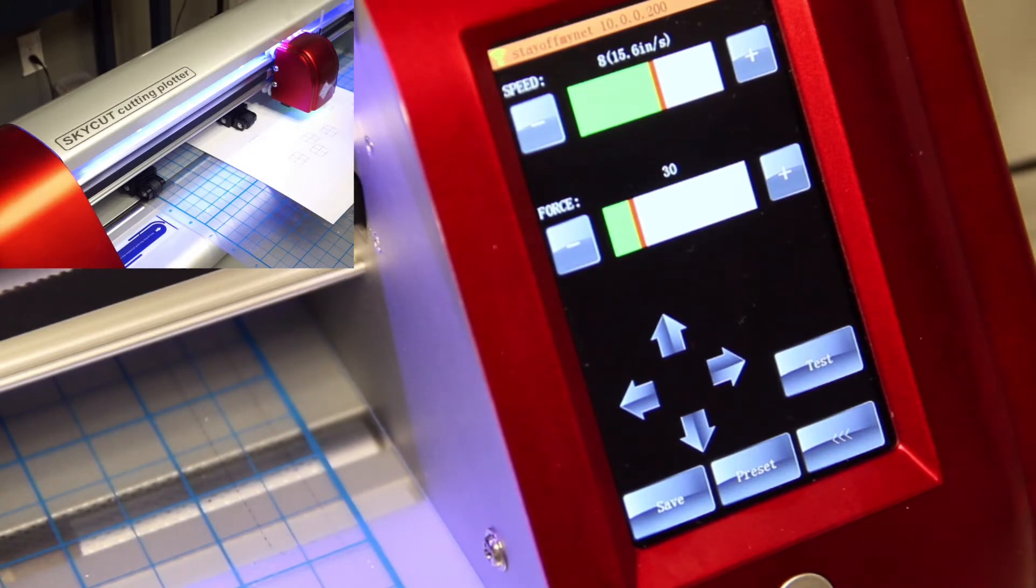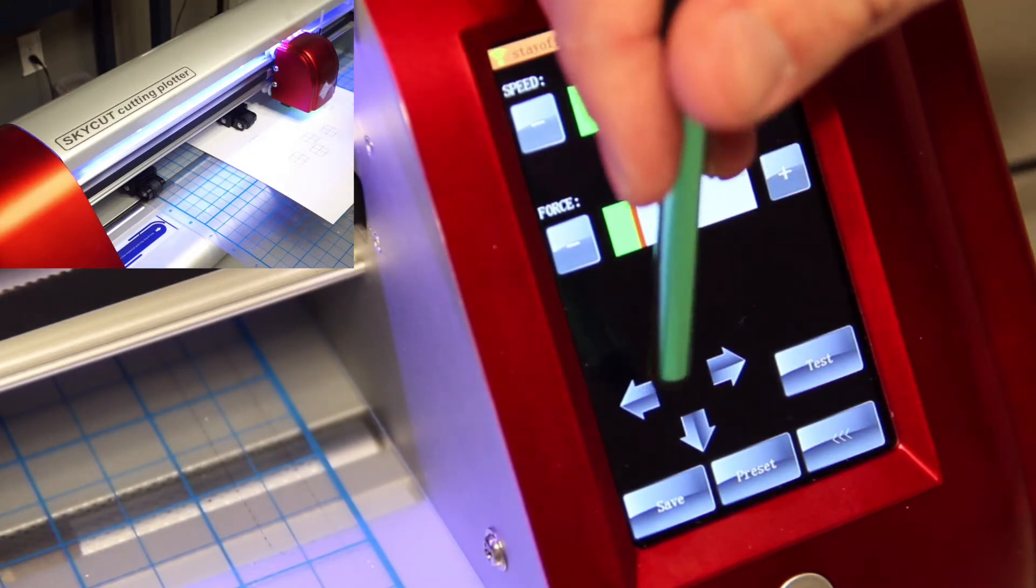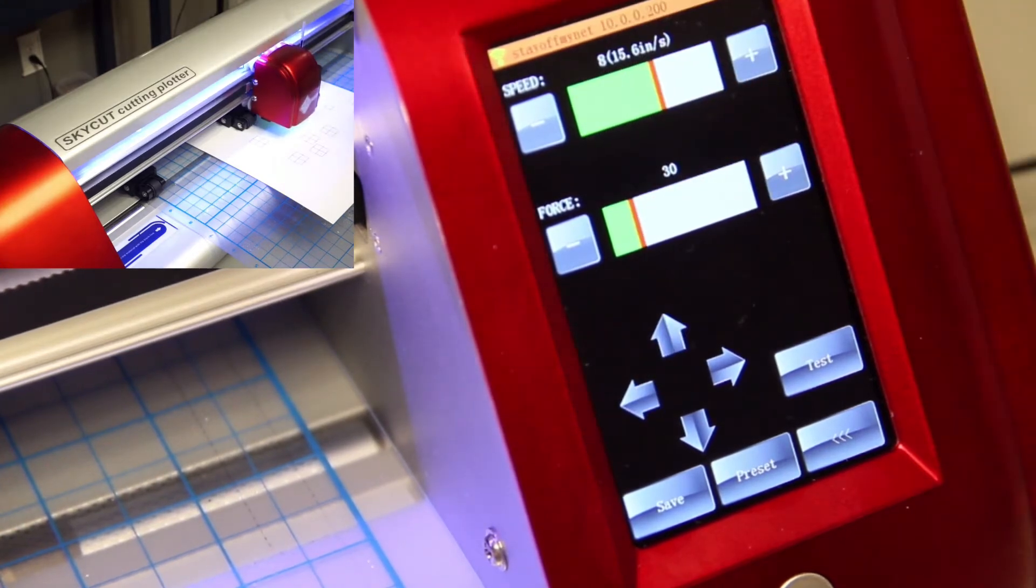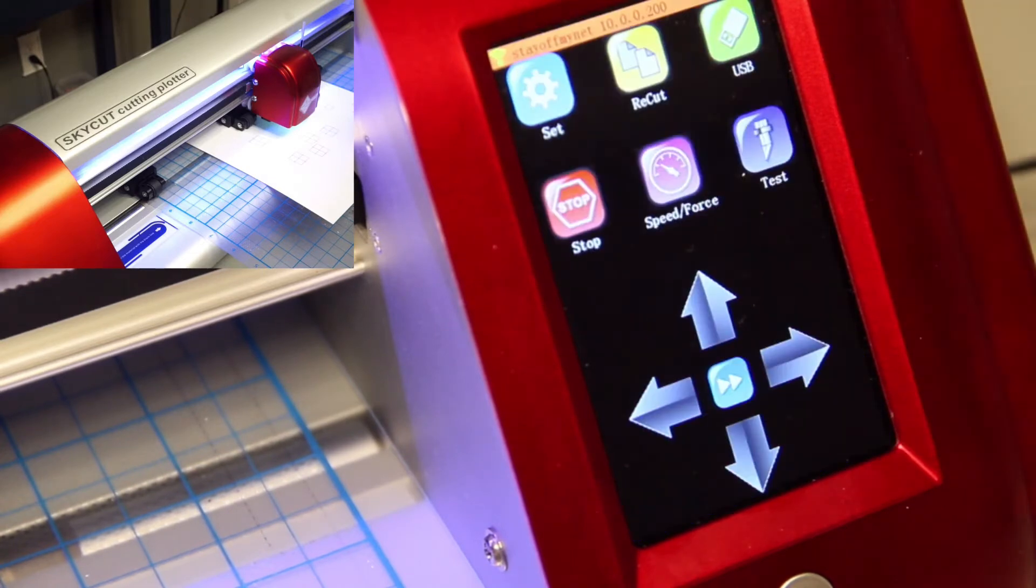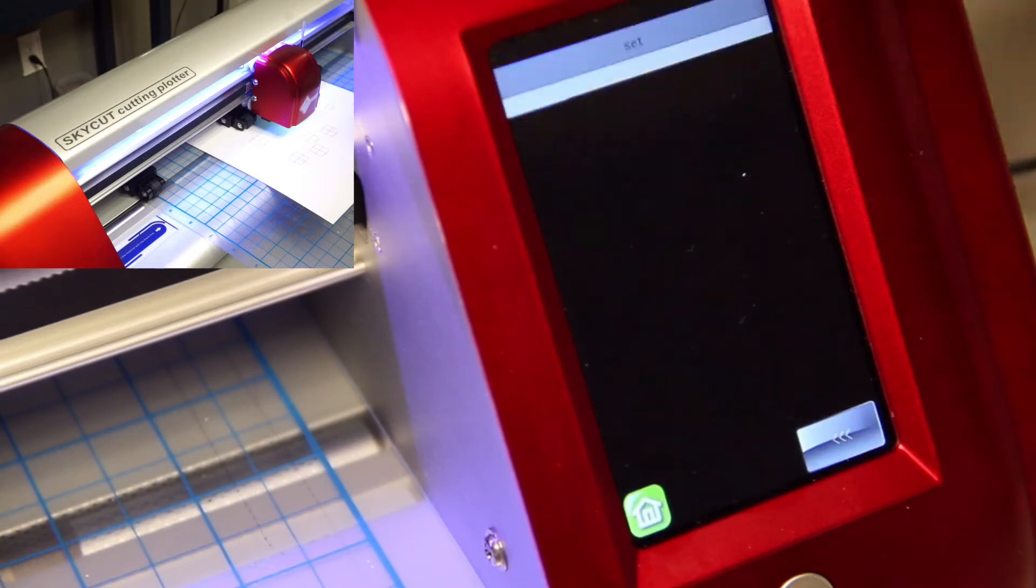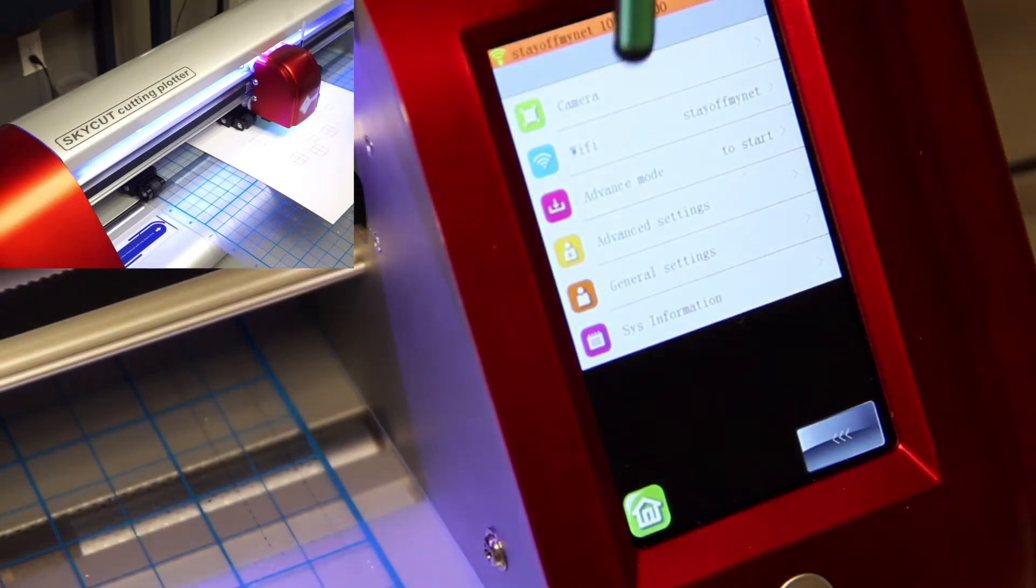So before we do that, we do want to move to a spot on the paper that doesn't have any drawing on it so that we can make sure that we are seeing everything that we need to do to calibrate. So I'm going to click on this button here, bring us back to the main home screen. And I'm going to click on the gear icon and then I'm going to click on the camera.